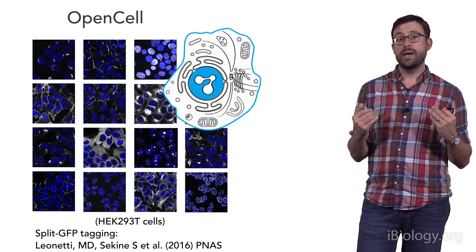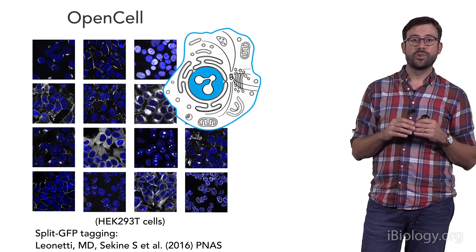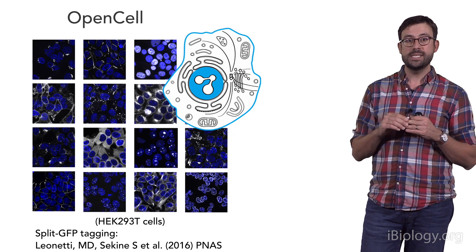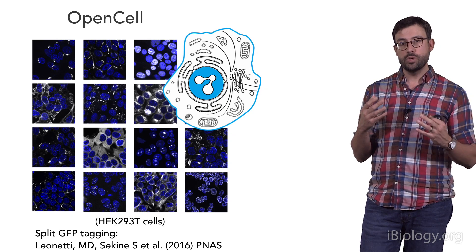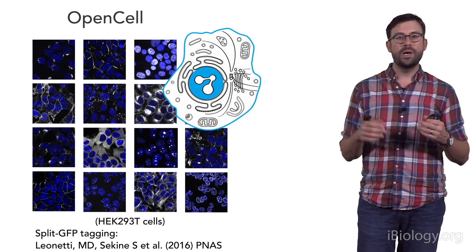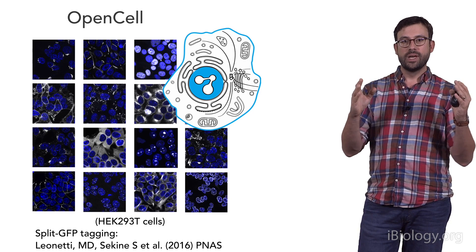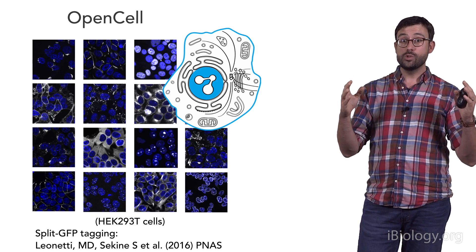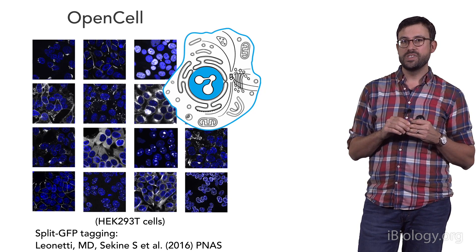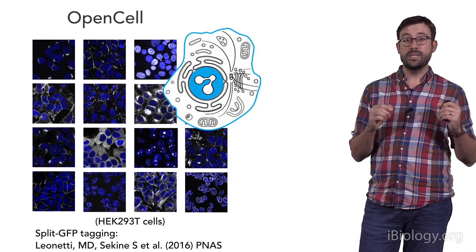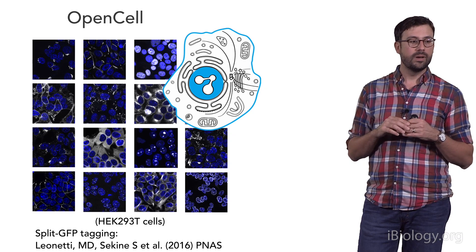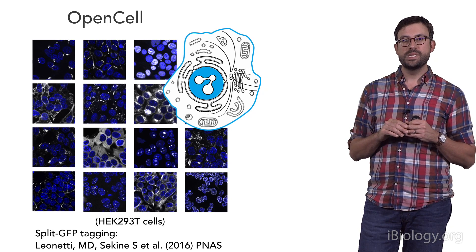In my own lab at the Biohub, we're using a very similar approach. In a project we call OpenCell, we're using a split-GFP system to facilitate high-throughput CRISPR tagging. That allows us to build libraries of hundreds, and soon thousands, of human cell lines tagged endogenously with fluorescent proteins. We're approaching the final stages of our first data release, and I'll be very excited to share what we learn from these experiments.